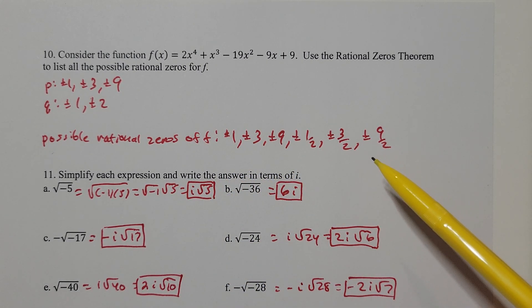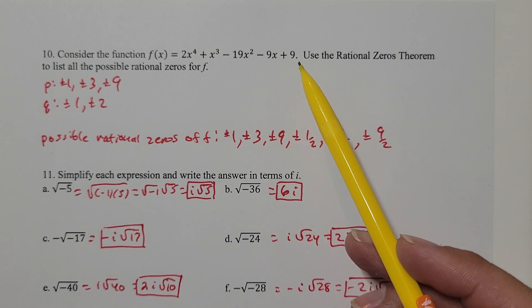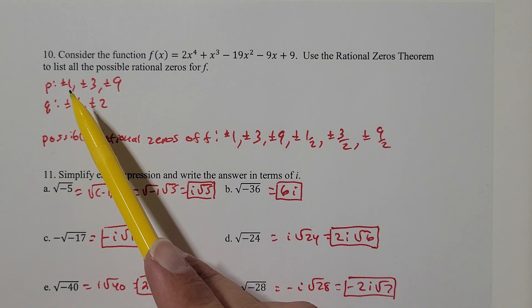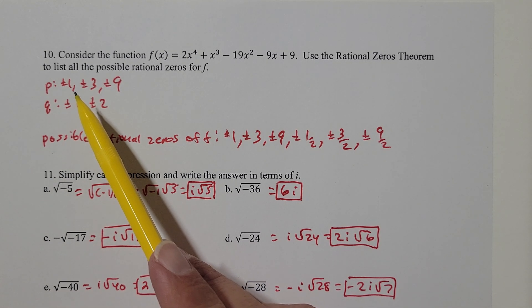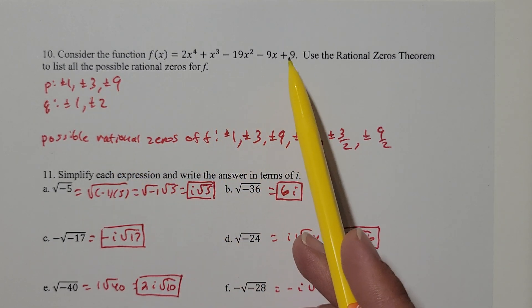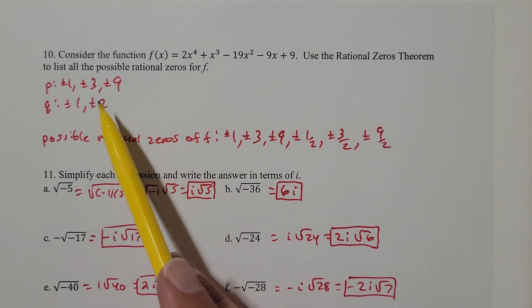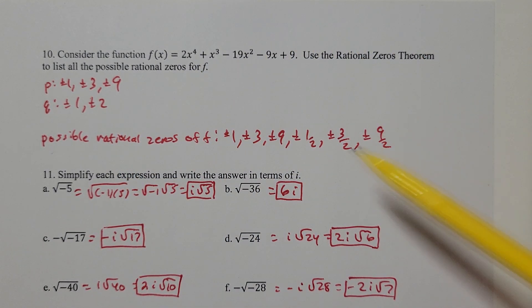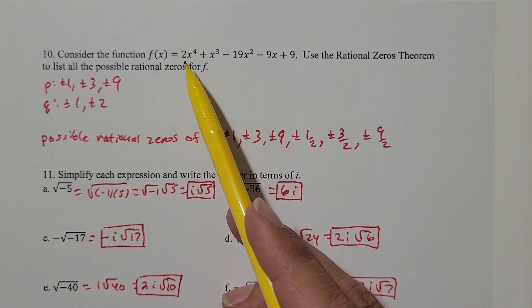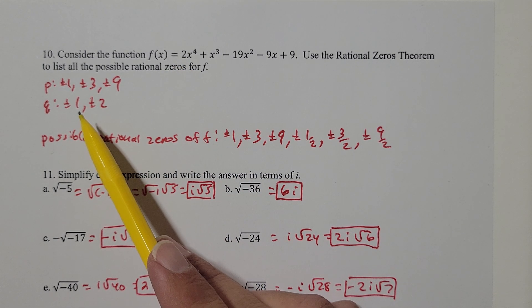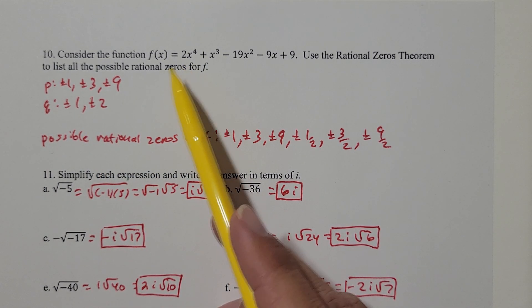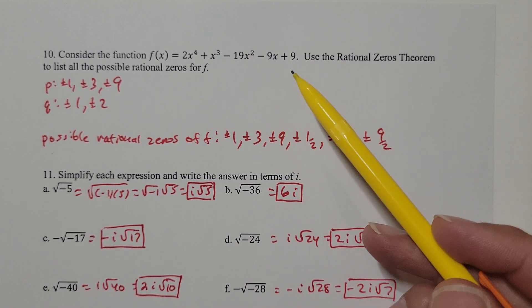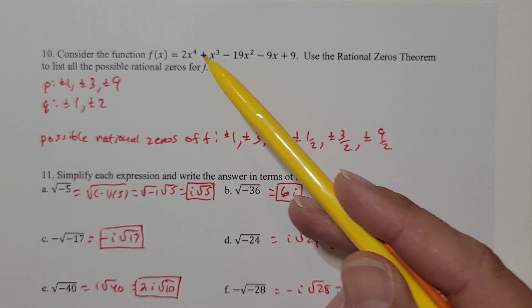I have to find the p values and the q values. The p values are going to be all the factors of the last coefficient. So what are all the factors of 9? We have plus or minus 1, plus or minus 3, and plus or minus 9. The q values would be all the factors of the first coefficient, 2. So we have plus or minus 1 and plus or minus 2. The p values are always the factors of the last coefficient; the q values are always the factors of the first coefficient.